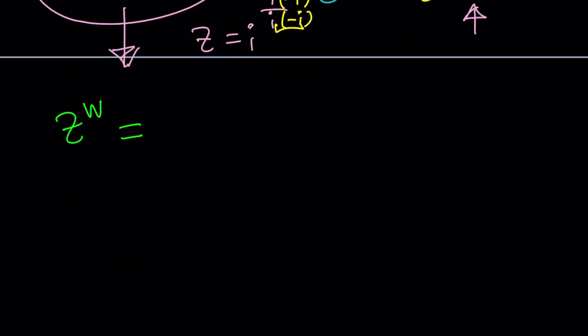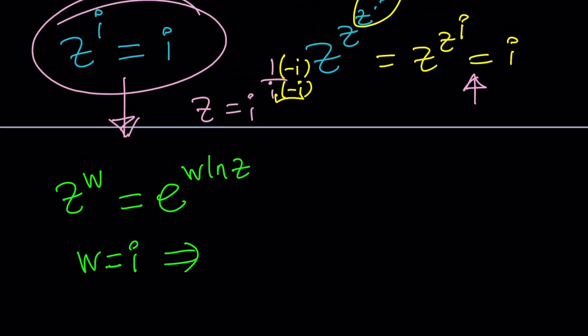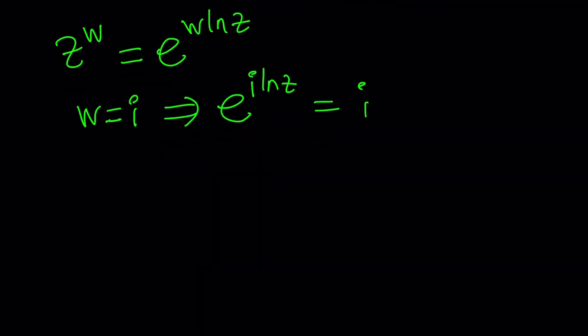Here's what I'm going to do. If you have anything like z to the power w, like a complex number to a complex power, we can write it as e to the power w ln z, and multiple values. Make sense? So it's not a single value. But if we apply to our problem where w is equal to i, we can replace w with i. It's going to be e to the power i ln z equals i.